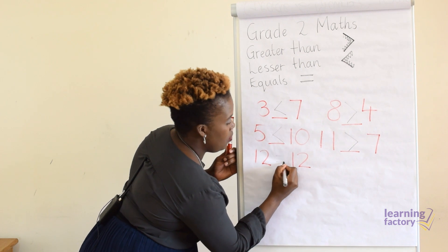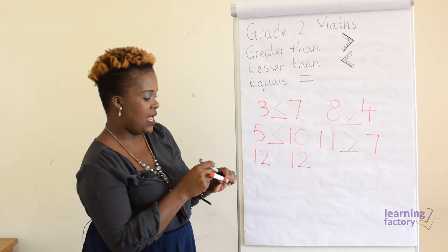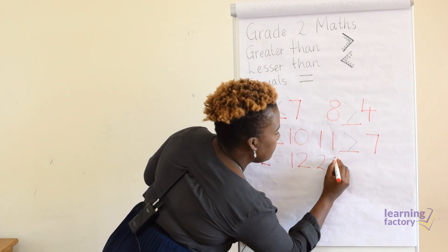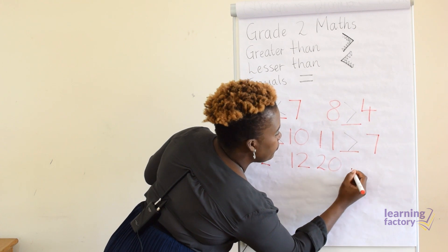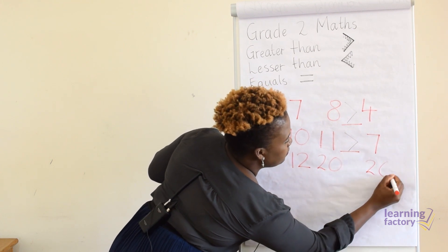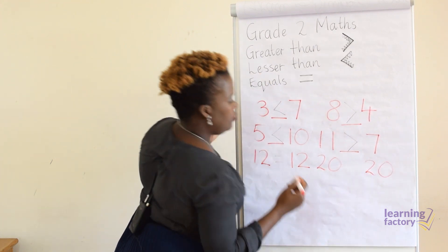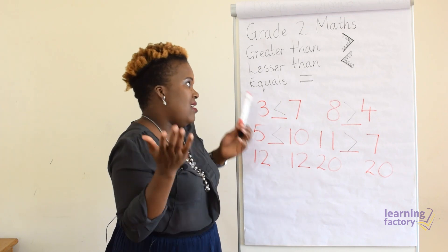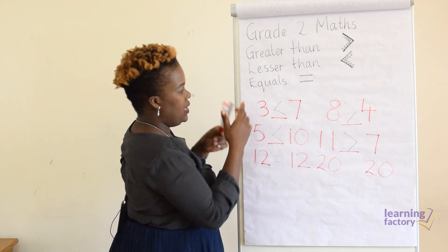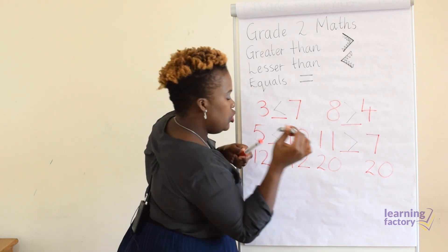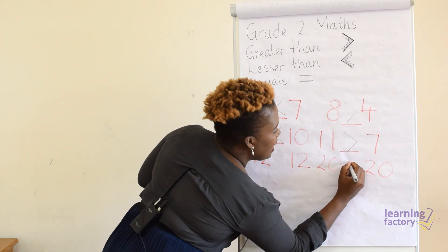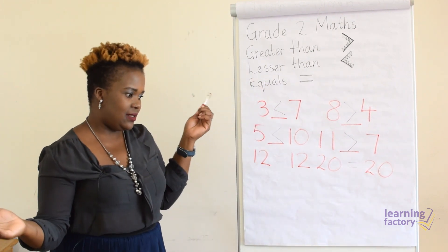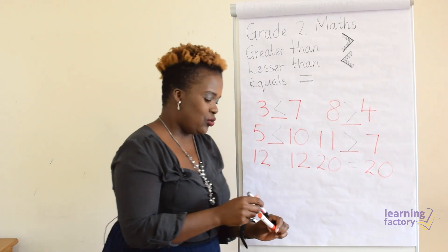Twelve and twelve — these numbers are the same, aren't they? Equals. So let's put our equal sign. And then we have twenty and twenty — these numbers are the same, so they're equals. Put your equal sign, and we're done.